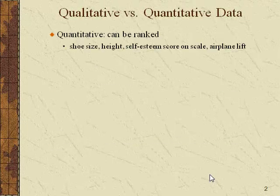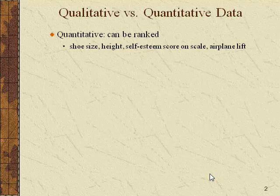Quantitative data is data that can be ranked. So if you think of something like shoe size, some people have bigger feet than others. Size 6 for a man is going to be smaller than size 8 for a man.